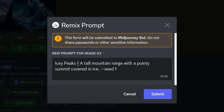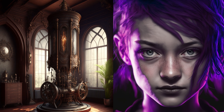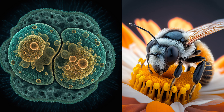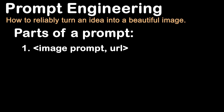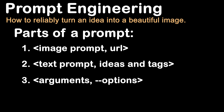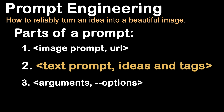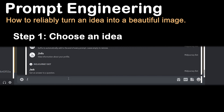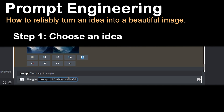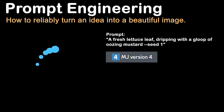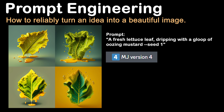Now we're on to the fun stuff. Once you understand the settings and your options, you have creative control to make whatever you want. Prompts have three parts: the image prompt, the text prompt, and the arguments. If you want to master Midjourney, the part with the highest skill ceiling is your text prompt. How do you turn an idea into a prompt? I'm going to teach you prompt engineering as I do it in Midjourney. Take a fresh lettuce leaf dripping with a gloop of oozing mustard — you'll get some good results. It's visual, it's fun, it looks like lettuce and maybe mustard, but it doesn't have that wow factor and looks a little bland.